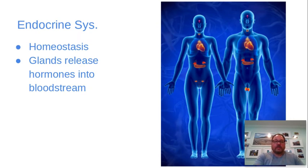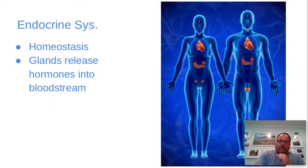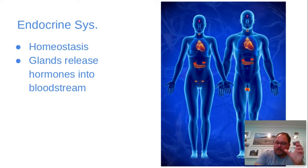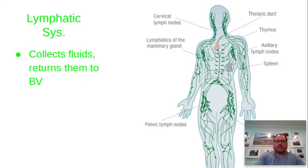Your endocrine system is a hormonal system that releases hormones to help regulate the body and maintain homeostasis. It uses a chemical signal rather than an electrical signal — a chemical signal that causes the body to respond in certain ways.